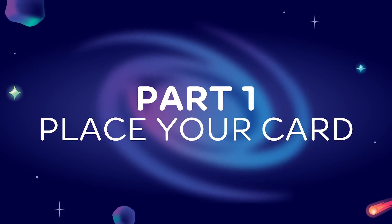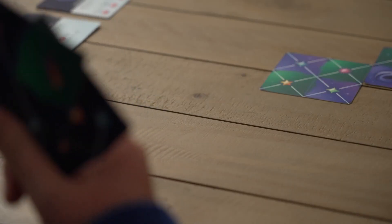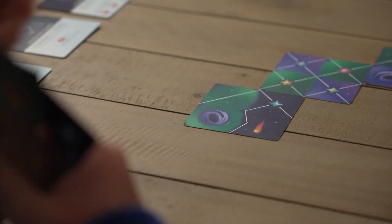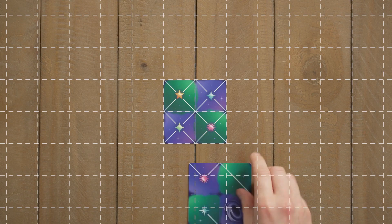Part 1. Place your card. Start your turn by placing one of your cards on the table following these rules. Cards you place must follow the grid.